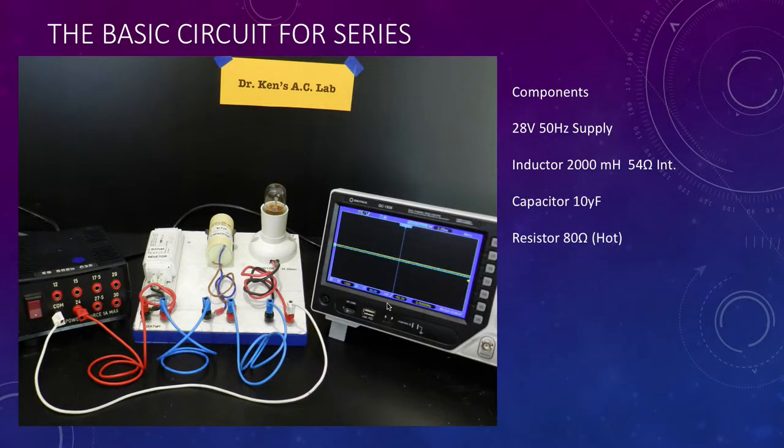Here's our basic setup. We have an AC supply at a nominal 24 volts. We've got a ballast inductor at approximately 200 millihenries, a 10 microfarad capacitor, and a lamp which will be running a little bit hot to have current through it, so it's got a resistance of about 80 ohms.